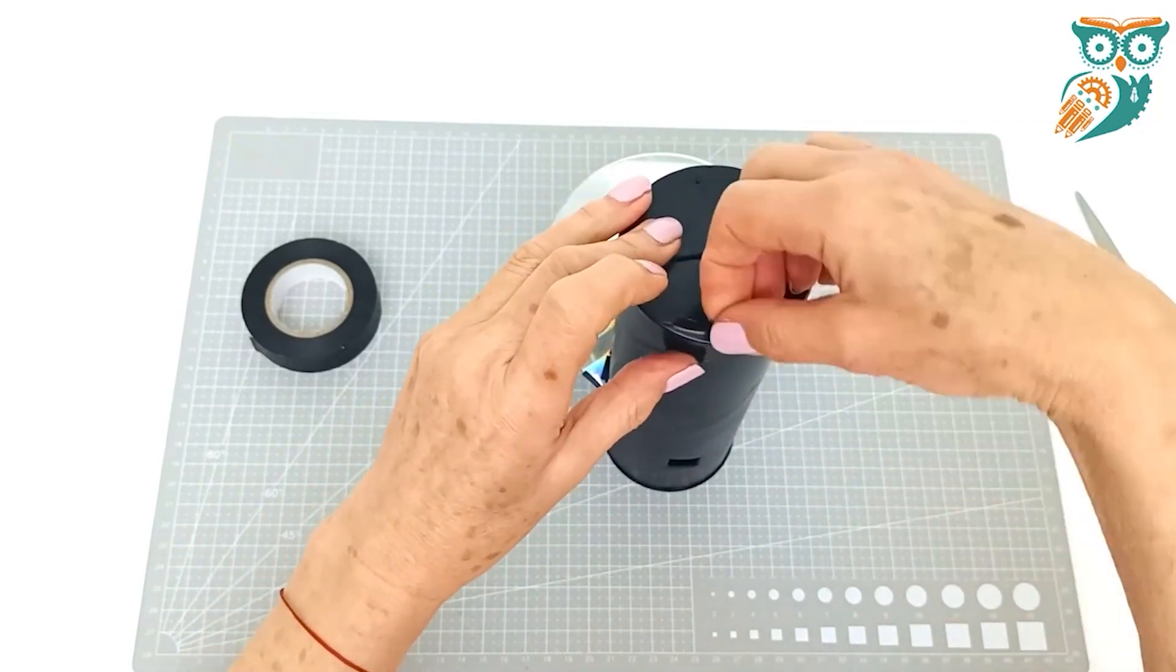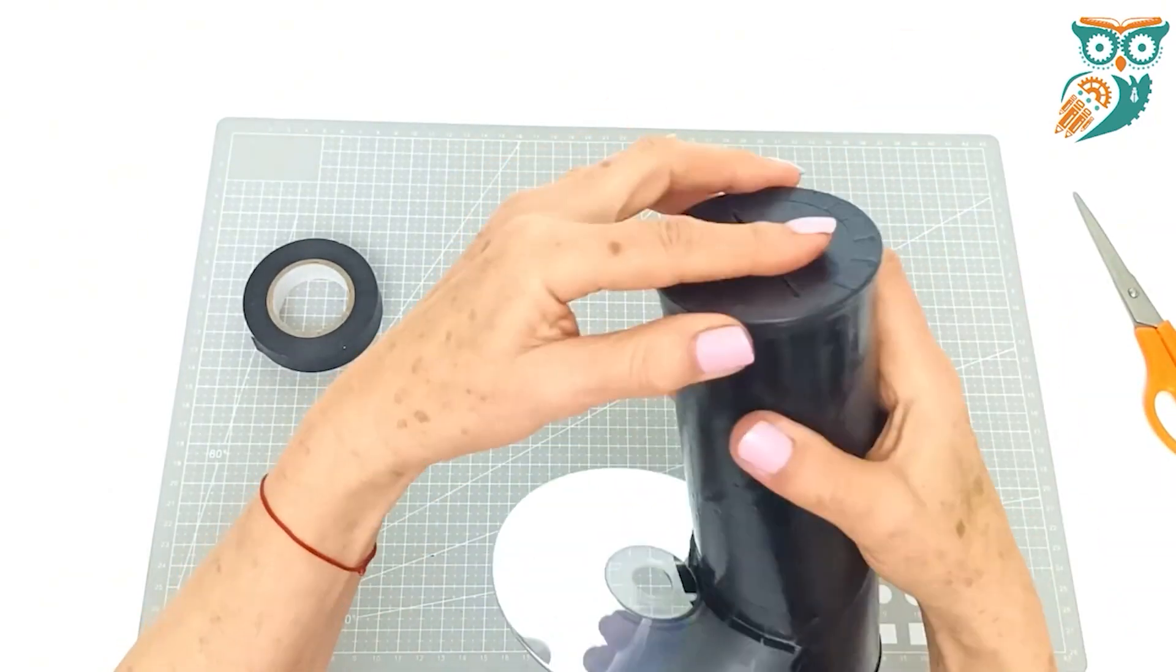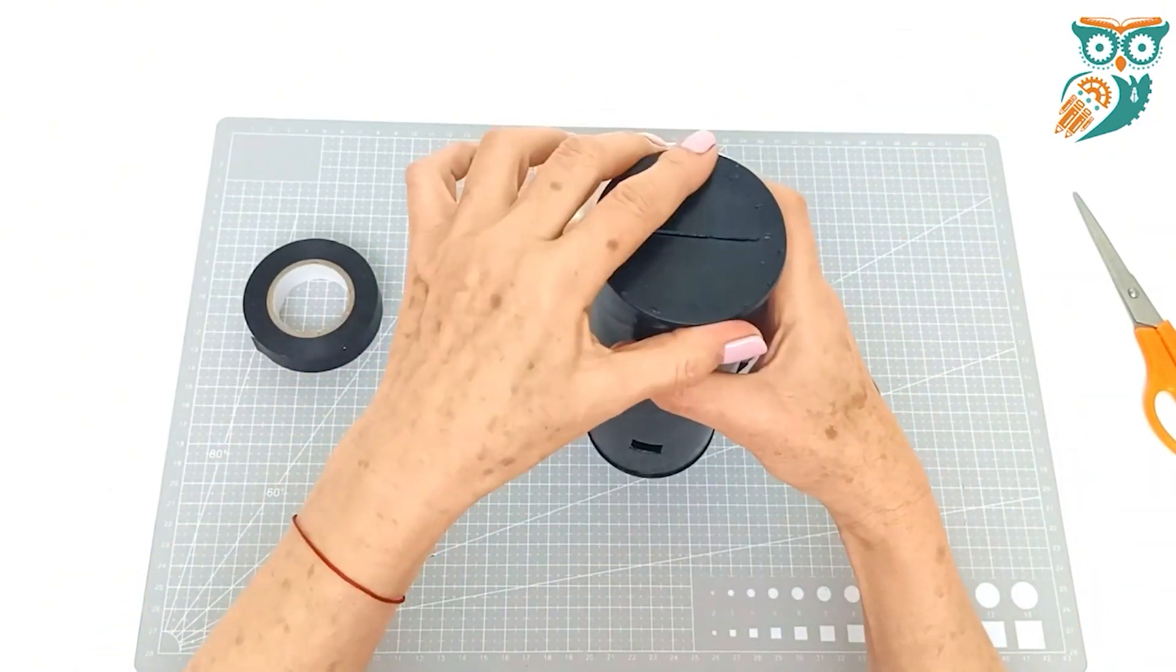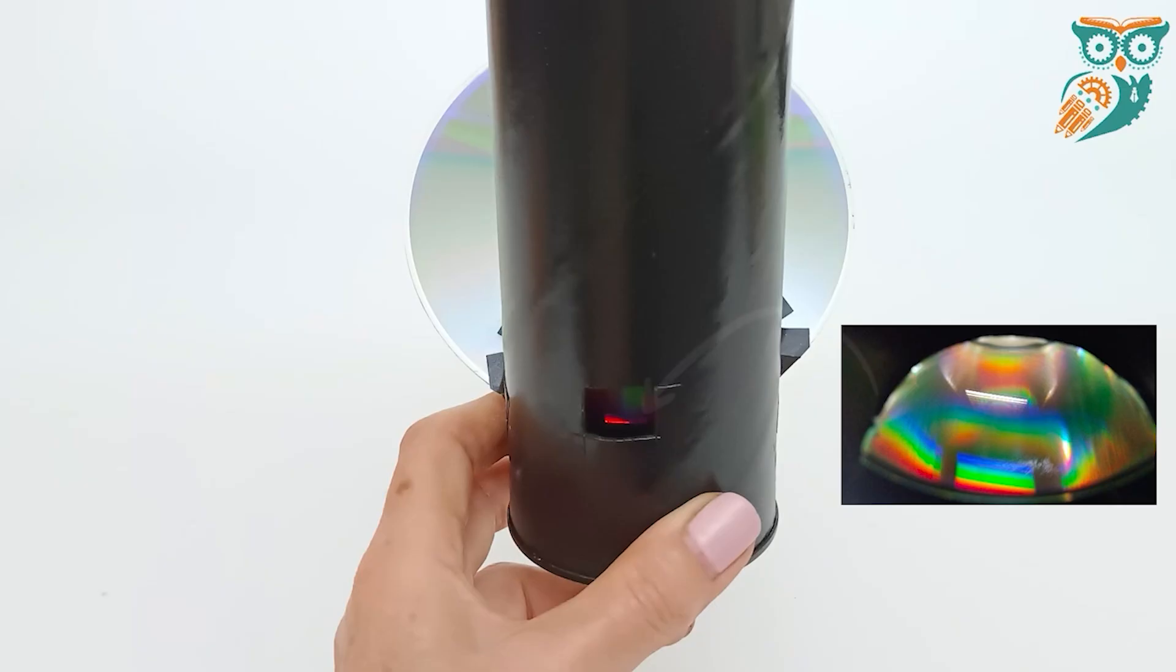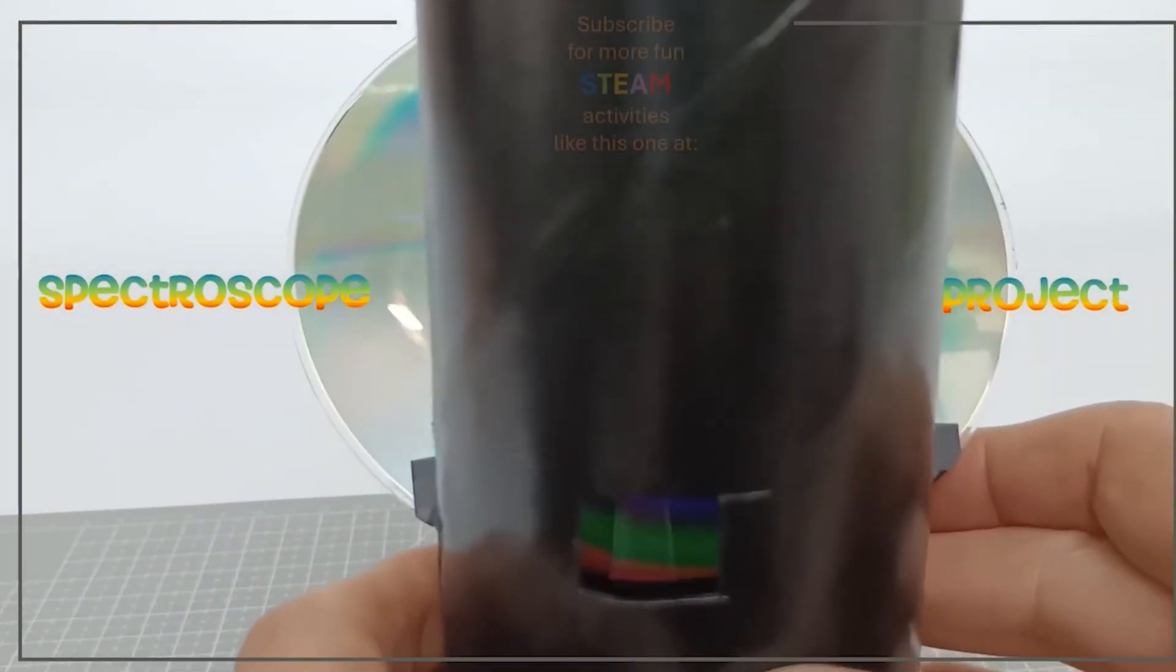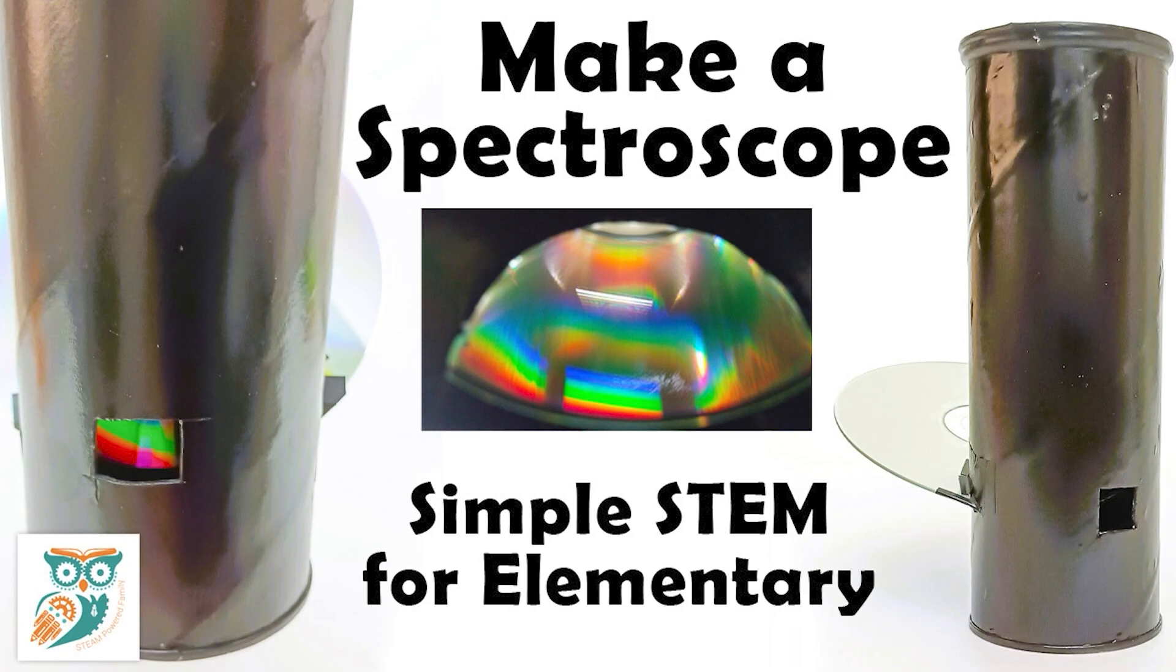We're just going to make sure all of that is perfectly secured. Now hold it in different types of light and take a look inside and you'll see different colors of rainbows depending on the type of light. The colors and rainbows that you see are going to change. For this and more STEM activities visit steampoweredfamily.com. Bye for now.